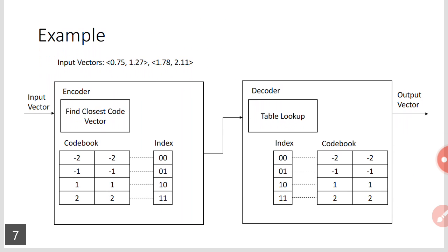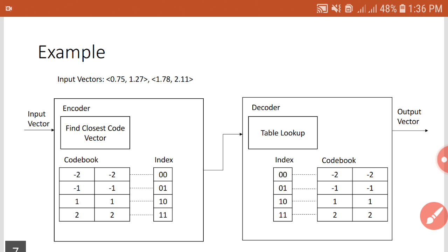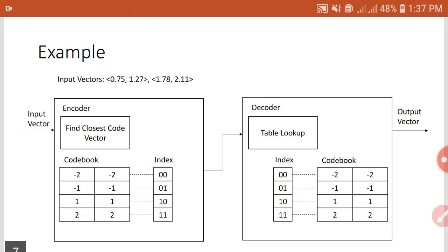Consider an example of vector quantization. There are two input vectors: the first is (0.75, 1.27) and the second is (1.78, 2.11). Since each vector has two individual values, these are two-dimensional vectors. The codebook has four code vectors: (-2, -2), (-1, -1), (1, 1), and (2, 2), each with an index value to identify it. With four code vectors, two bits are sufficient for the index value. The same codebook is present at the decoder side.